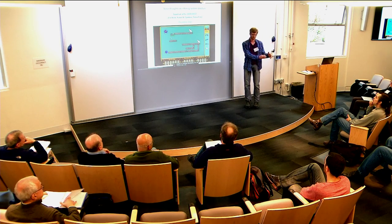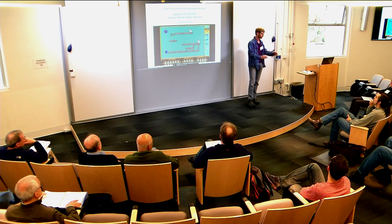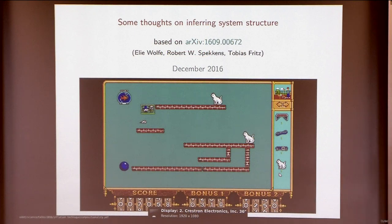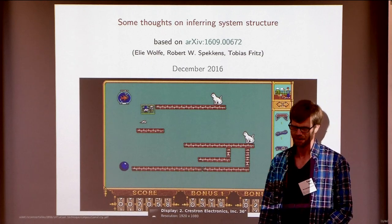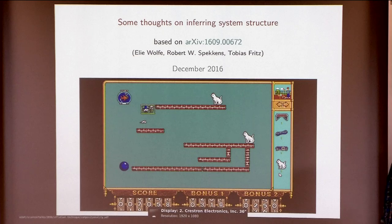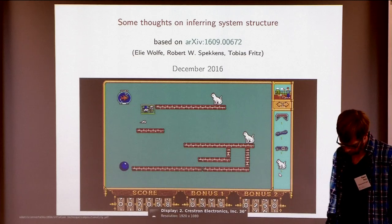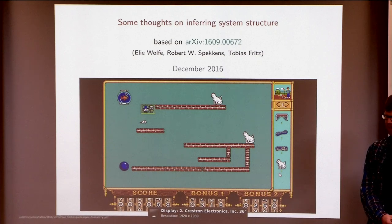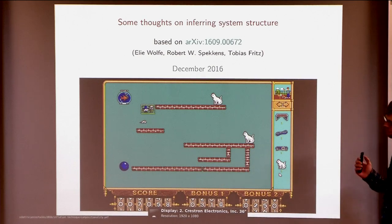What can you say about when you are given a network or a composite system and you want to figure out what it's made of? This is the type of problem I'd like to address. I don't yet have a definite formal framework for this problem — these are more preliminary ideas — but I do have, in this paper, a framework for one particular flavor of network, namely causal networks and spatial networks, which I'll talk about in the second half.